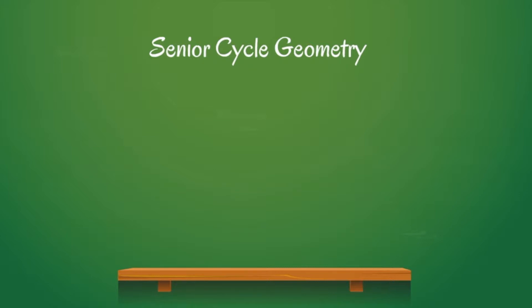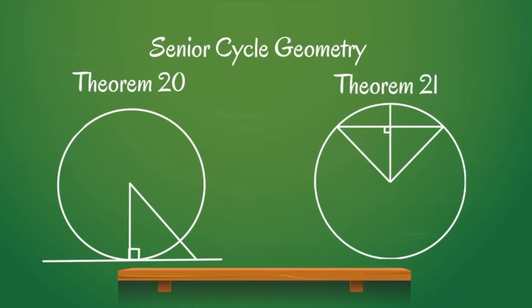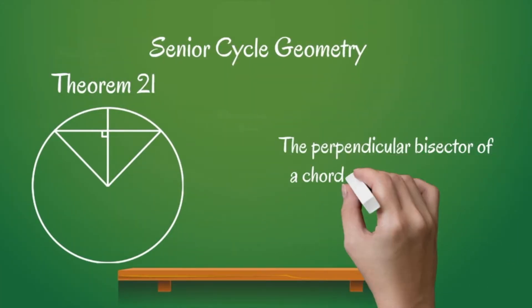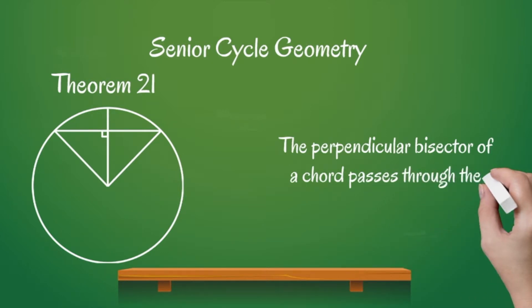This theorem is revisited in sixth year, along with the introduction of two new circle theorems, Theorem 20 and 21. The focus of the introductory lesson is theorem 21, which states that the perpendicular bisector of a chord passes through the centre of a circle.